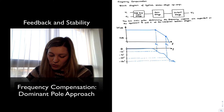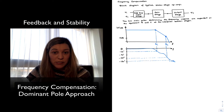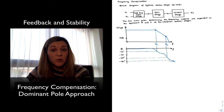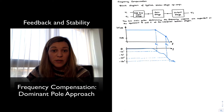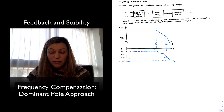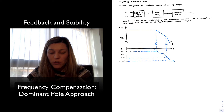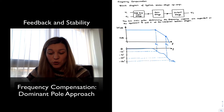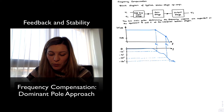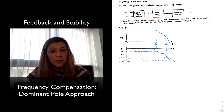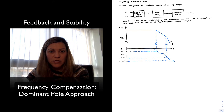The equivalent resistance seen at those interfaces is going to be the output resistance of the previous stage and the input resistance of the subsequent stage. There is also an equivalent capacitance seen at each interface. So for a three-stage amplifier, there are two poles that majorly define the frequency response — the poles determined by the resistances and capacitances seen at the two interfaces between stages.